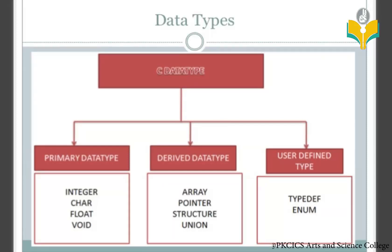The three categories are: primary data types, derived data types, and user-defined data types. Primary data types are again divided into four types: integer data types, character types, float type, and void type.